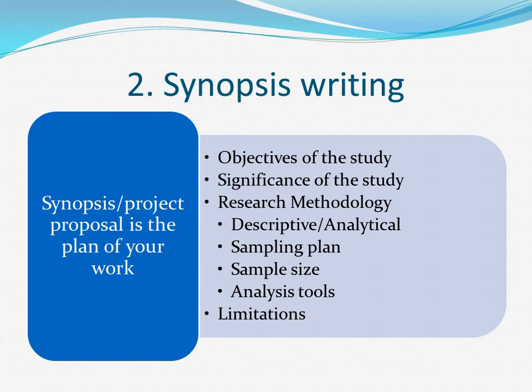The second step in a project work is synopsis writing. A synopsis or project proposal is the plan of your research. It consists of objectives of the study — you can define two to three objectives. In the example of Agricultural Loans, you can have objectives like: to study the trend of Agricultural Loans during the last 5 years, or to analyze NPL in Agricultural Loans during the last 5 years.